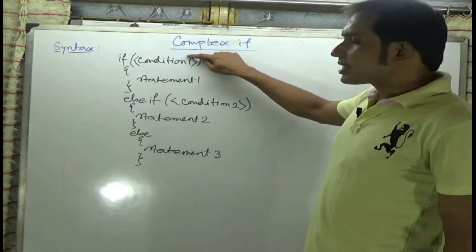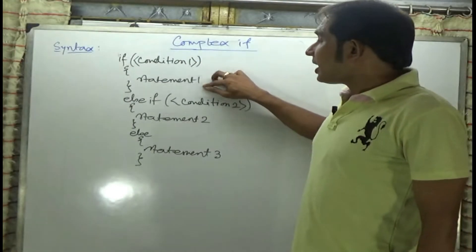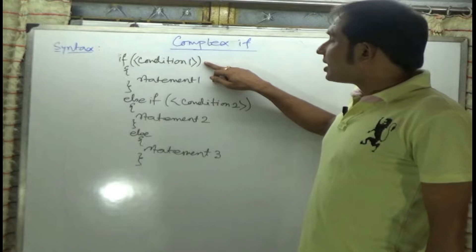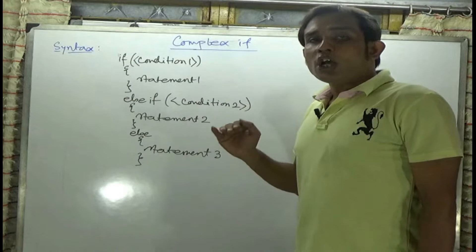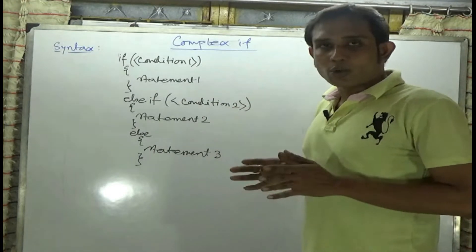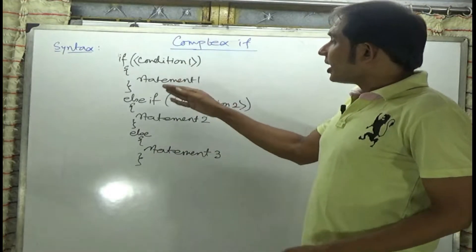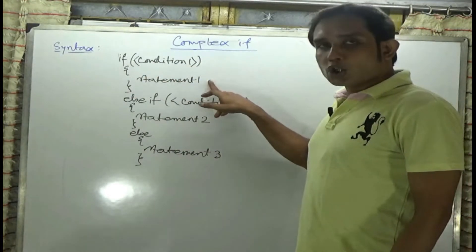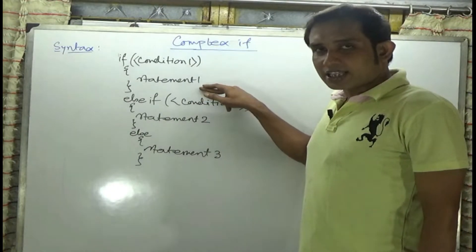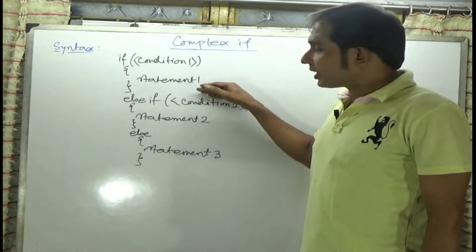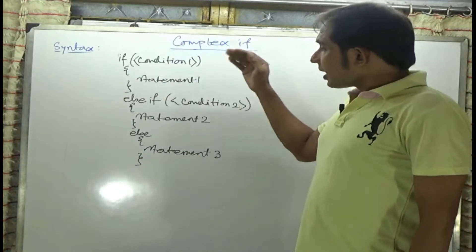Suppose if condition 1 becomes true, then statement 1 is going to execute. And if condition 1 is true and statement 1 executes, the rest of the portion is not going to execute — rather, it is not even going to be checked. Control completely goes to this portion, and after completing all the lines written in statement 1, they execute. Then the control goes out to the next block of the program.